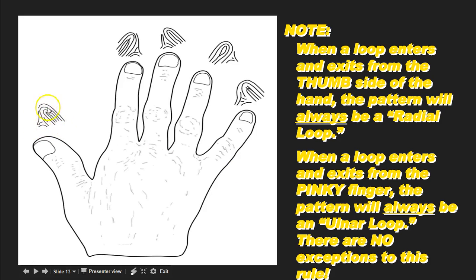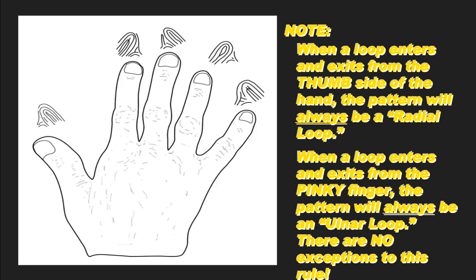So on this hand, we can see that the right thumb is an ulnar loop, the right index finger is a radial loop, the middle finger is an ulnar loop, the right ring finger — notice this one goes towards the thumb — so this is a radial loop. And the right pinky is an ulnar loop. Notice that on one person's hand they can have multiple different fingerprint patterns — even though all five of these fingerprints are loops, three of them are ulnar loops and two of them are radial loops.